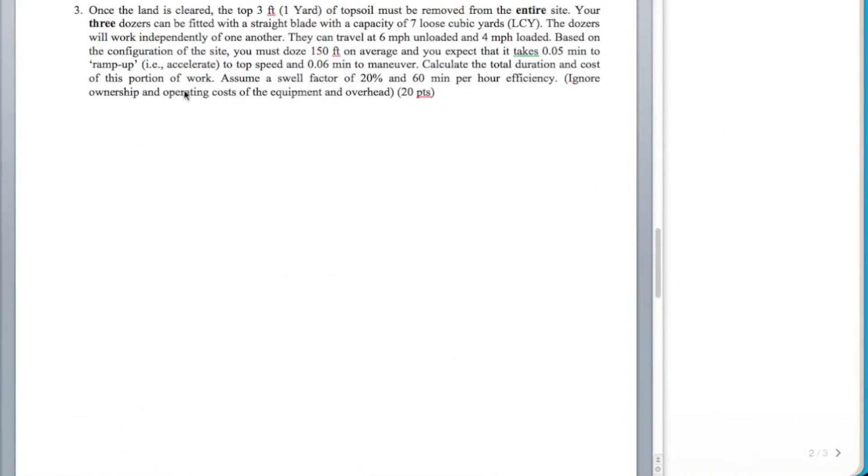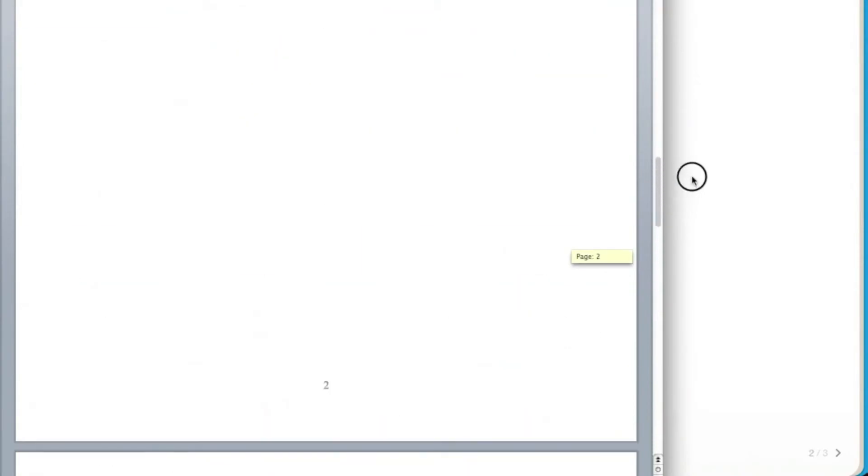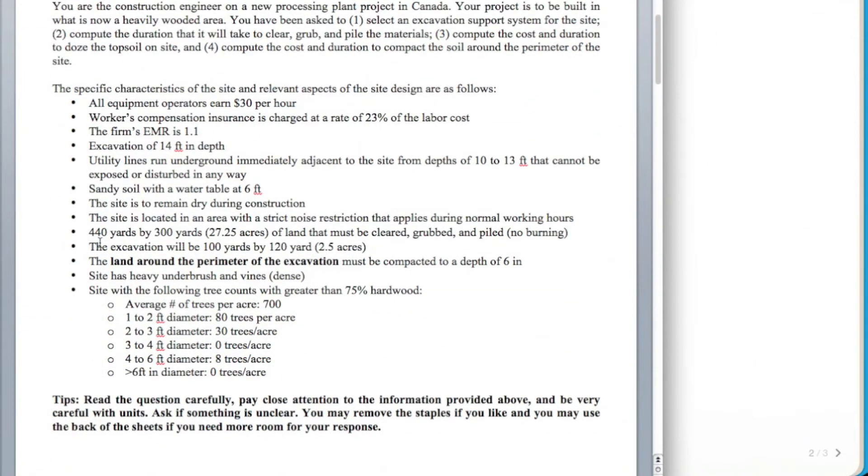In problem 3-256 for the construction engineering course, this problem is going to consist of us trying to excavate. We're going to be calculating the dozer production and we want to find the total duration and cost of this portion of the work. Some information that we're definitely going to need is the depth that we're going down for the entire site. If you go back to the introductory information, this is the site dimensions: 440 yards by 300 yards.